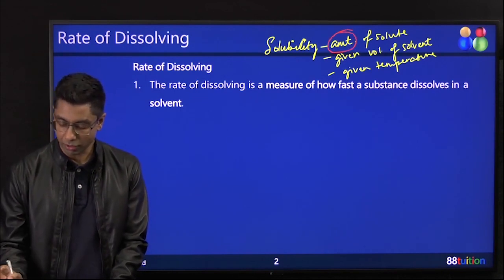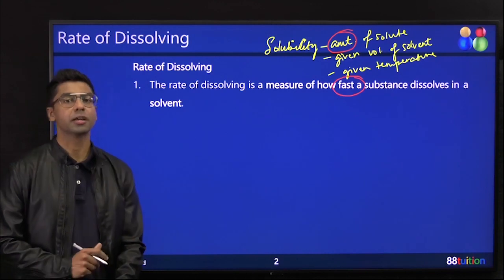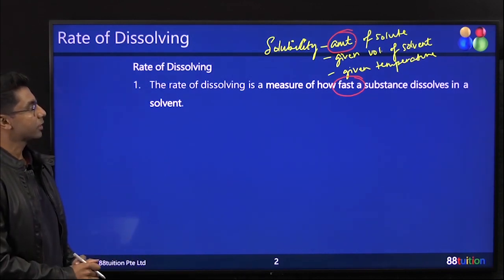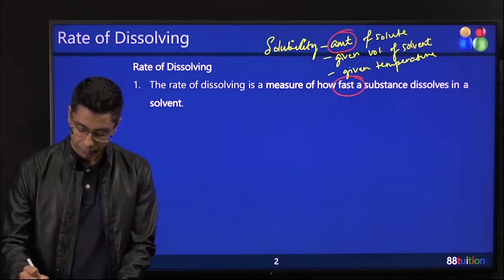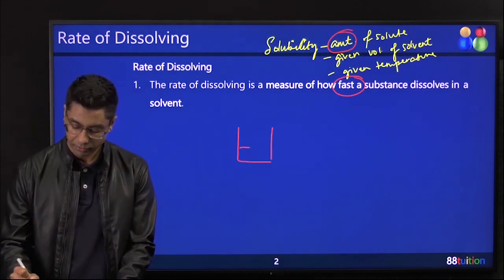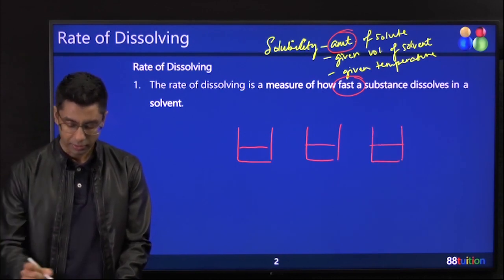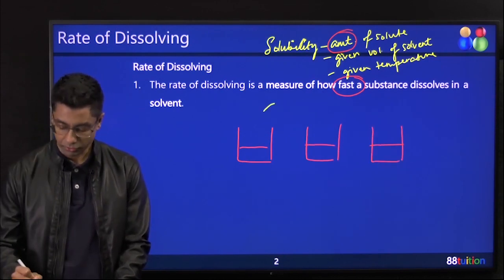Rate of dissolving is the measure of how fast—now this is the key difference to today's lesson—how fast the substance dissolves in a solvent.